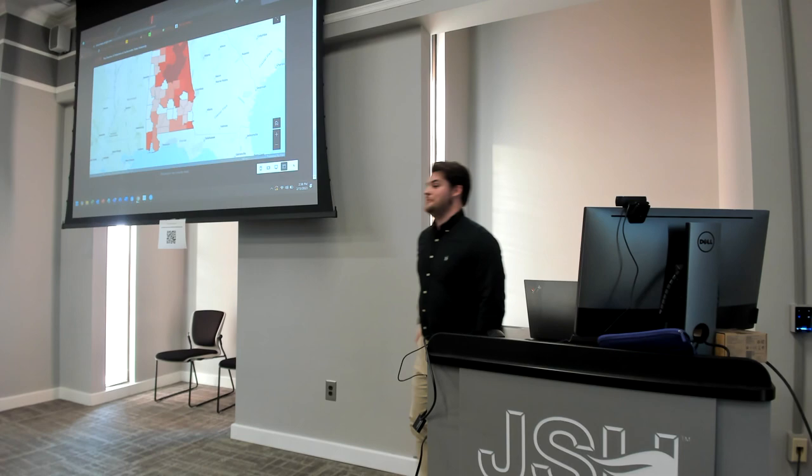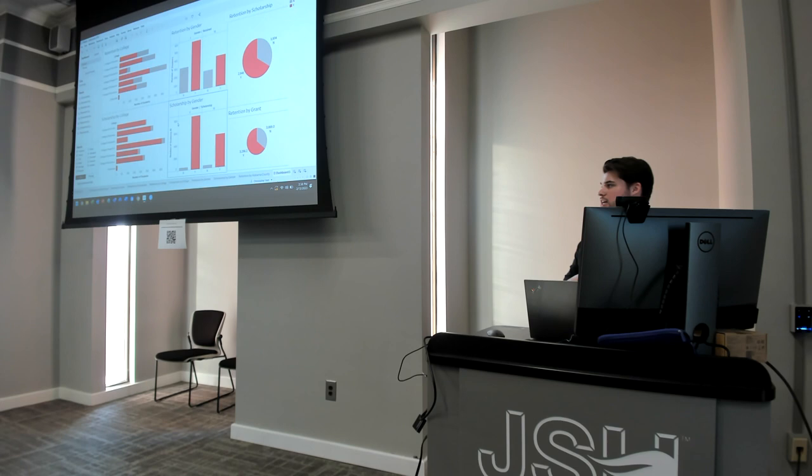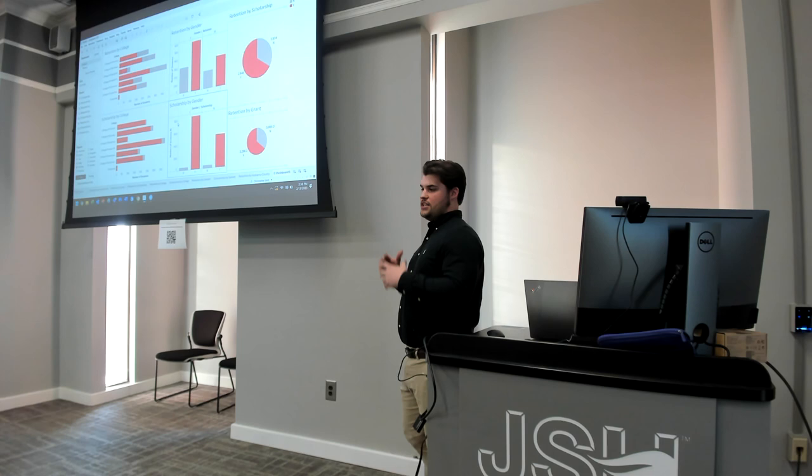On the slide with the bar graphs for retention by college — is that retained to that college? Could a student have stayed at JSU but moved from Arts and Humanities to Business, and it shows them as not retained? That is retained by what they started out as, so they could have moved to a different college. That information is not in the data if they moved to a different college.